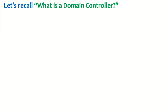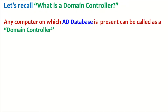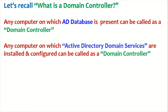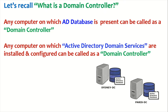Before diving into RID Master, let us look at what a domain controller is. Any computer on which the Active Directory database is present can be called a domain controller. Or any computer on which Active Directory Domain Services are installed and configured can be called a domain controller. Here we have two servers — Sydney DC and Paris DC — and we can call them domain controllers because they host the Active Directory database.